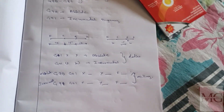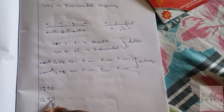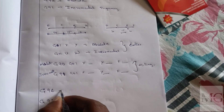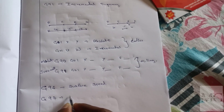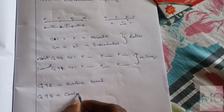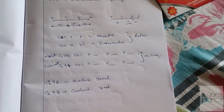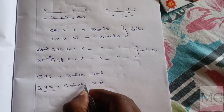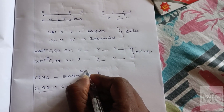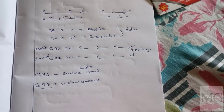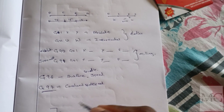Next are G96 and G97, which relate to spindle speed. G96 is constant surface speed, and G97 is constant spindle speed in RPM. The difference is in how spindle rotation speed is controlled.